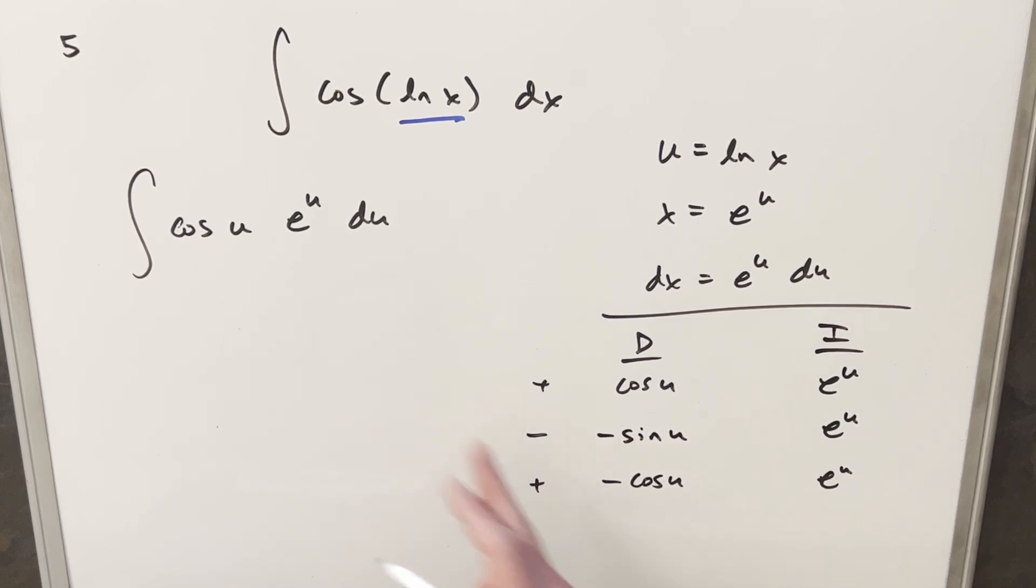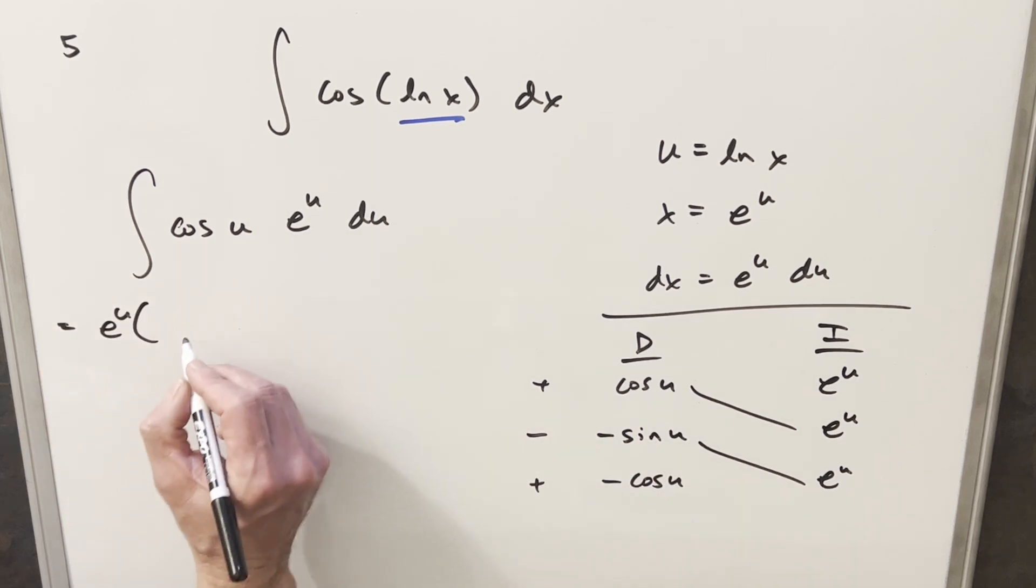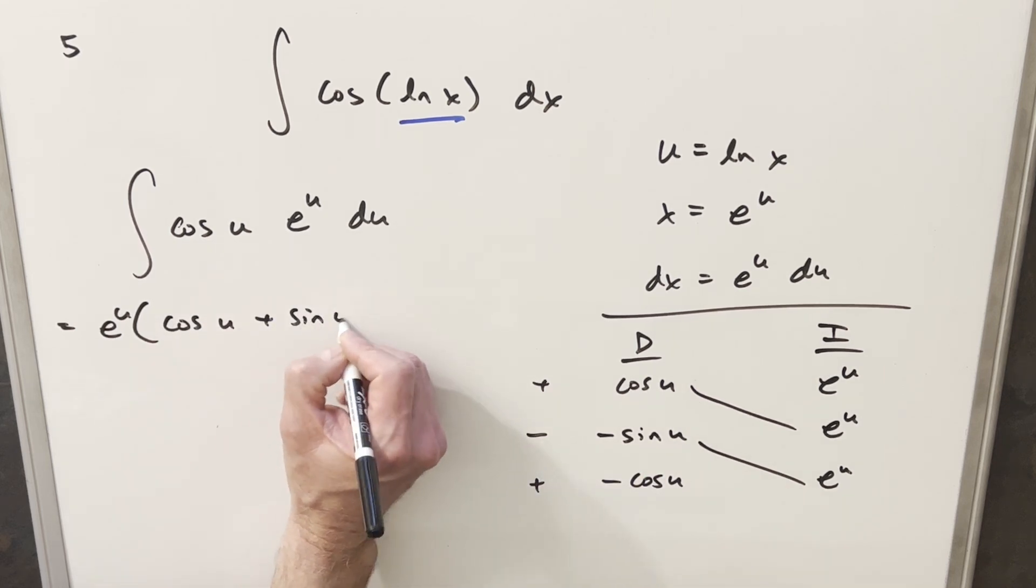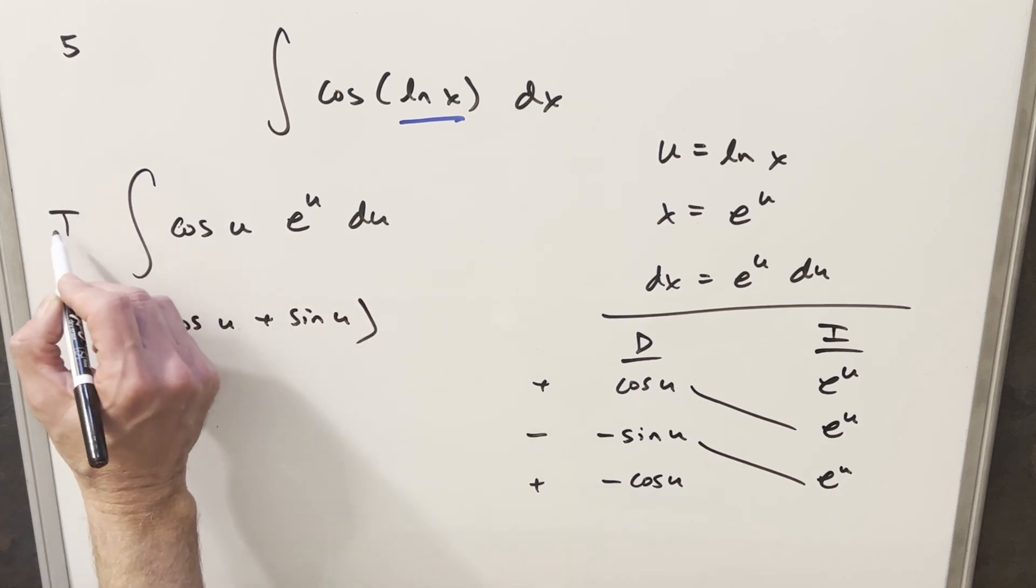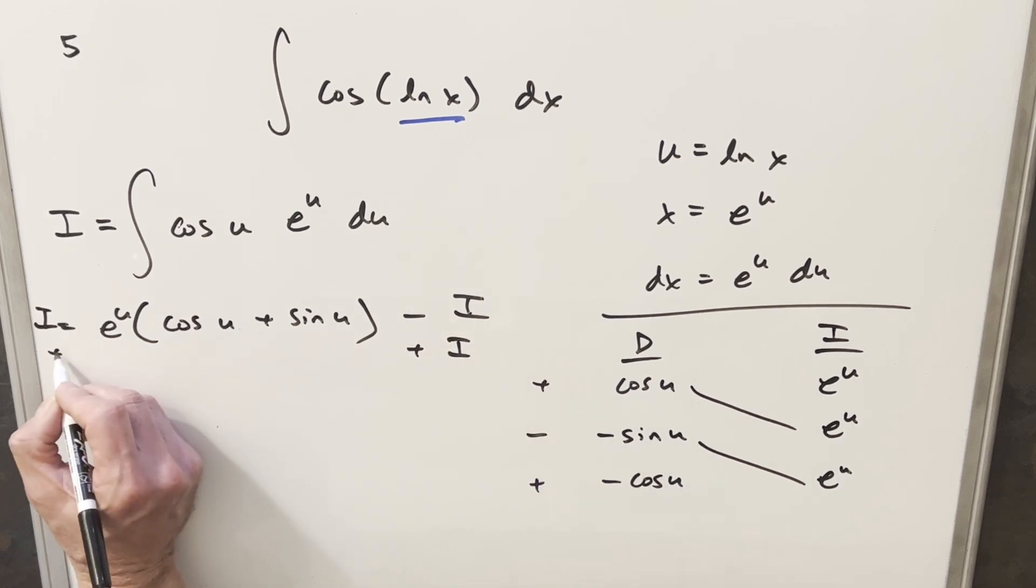But because now we repeat, we've got the same thing as our original integral. We'll just kind of stop right here. So we'll have part of the solution here on the diagonal. So we'll have, I'm going to factor out e to the u. And this minus times minus here is going to give me a plus. So we're going to end up with cosine u plus sine u. And what I'll do, I'll just label this integral here as I, because then this is actually going to become minus I. So let's see if I squeeze this in over here, and I just add an I on both sides here.